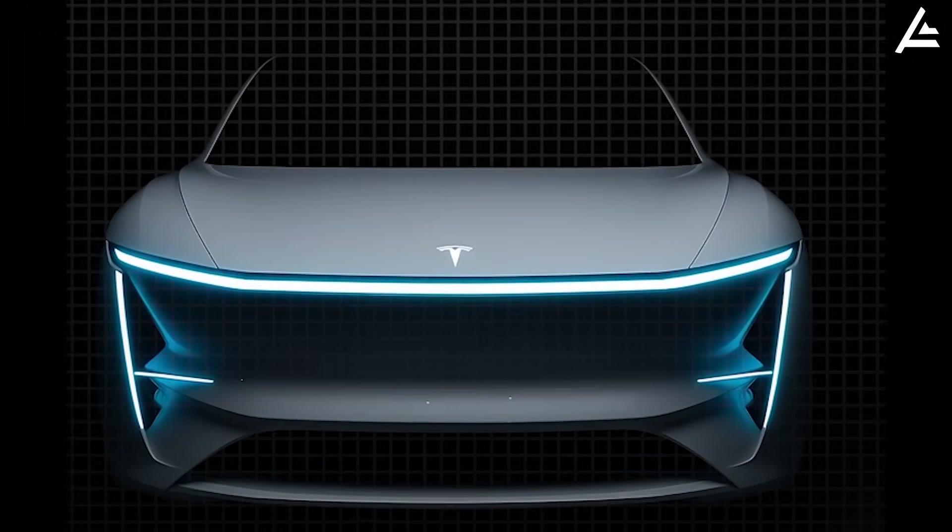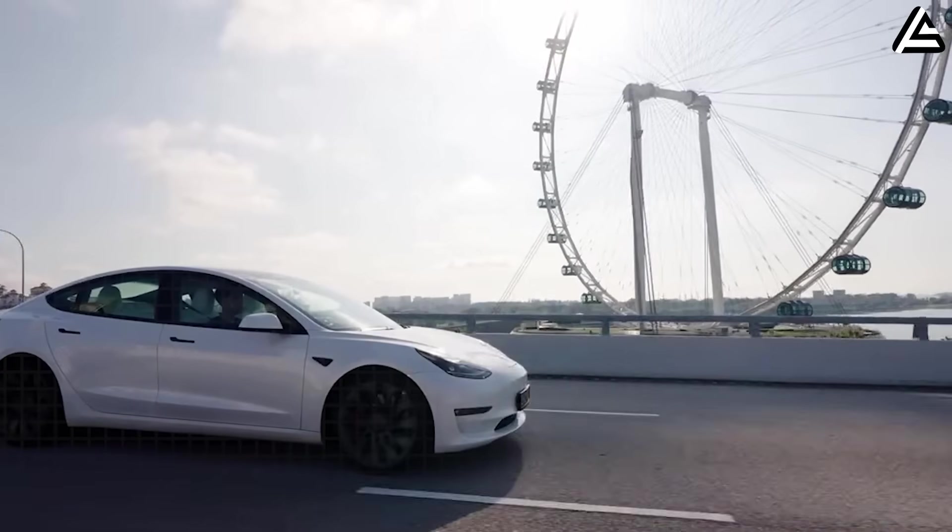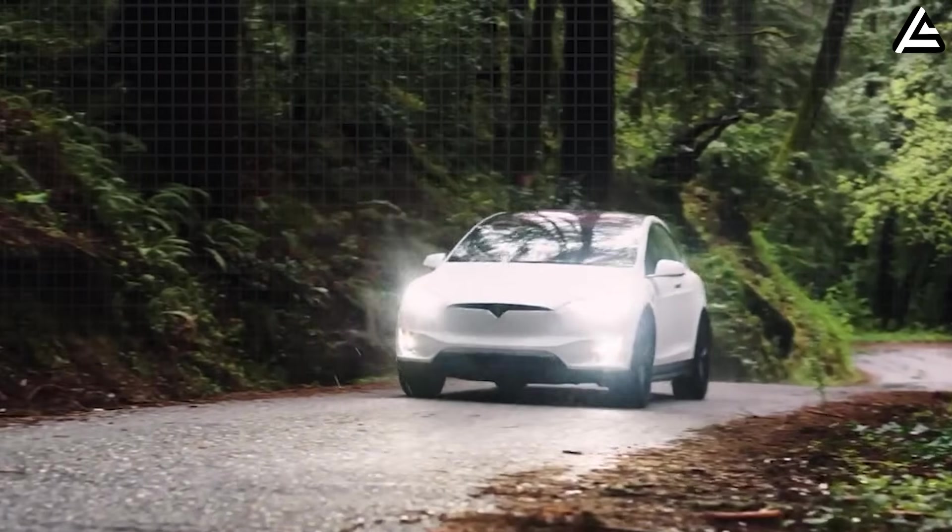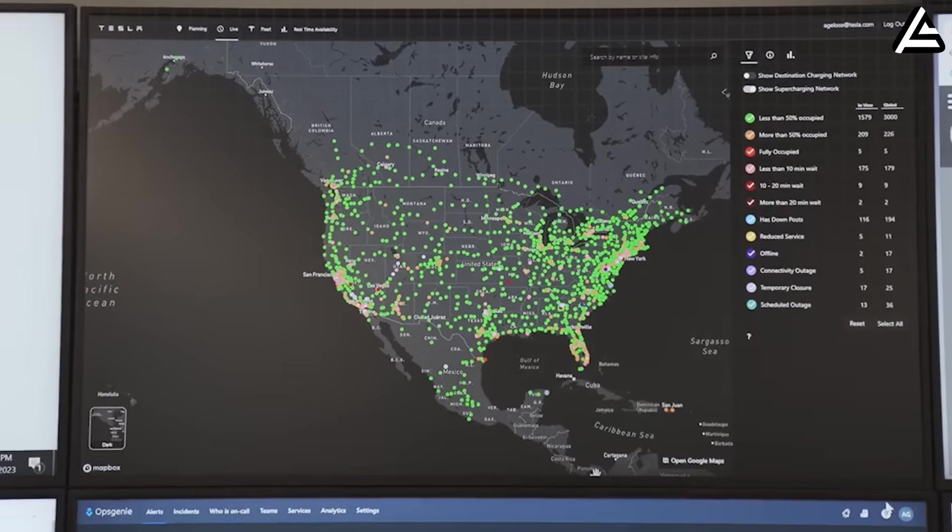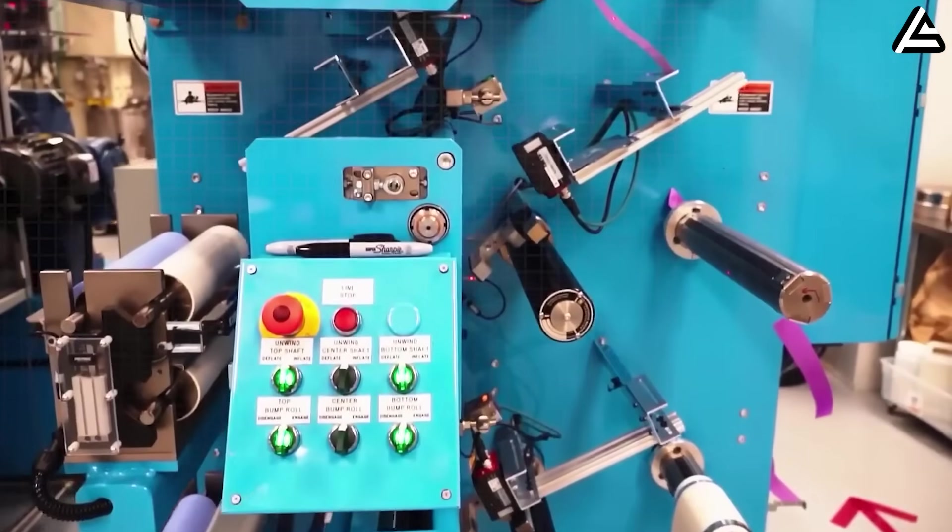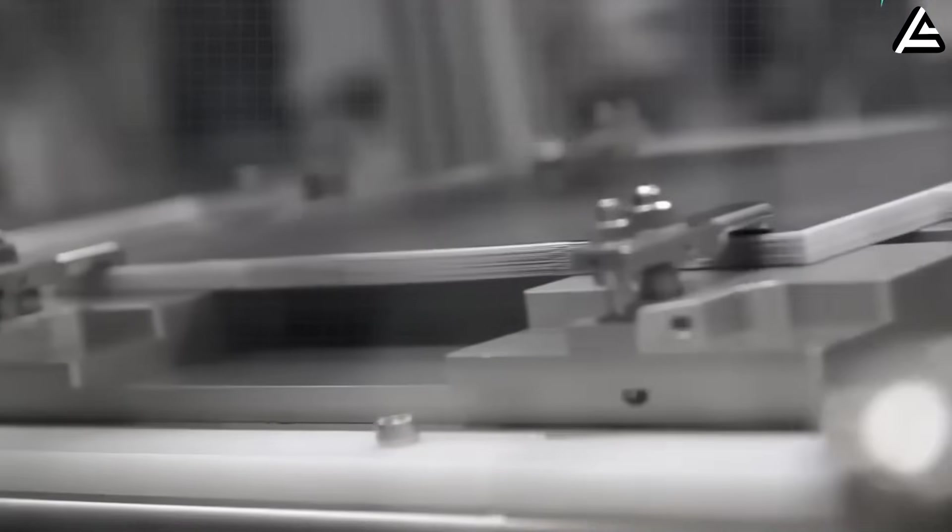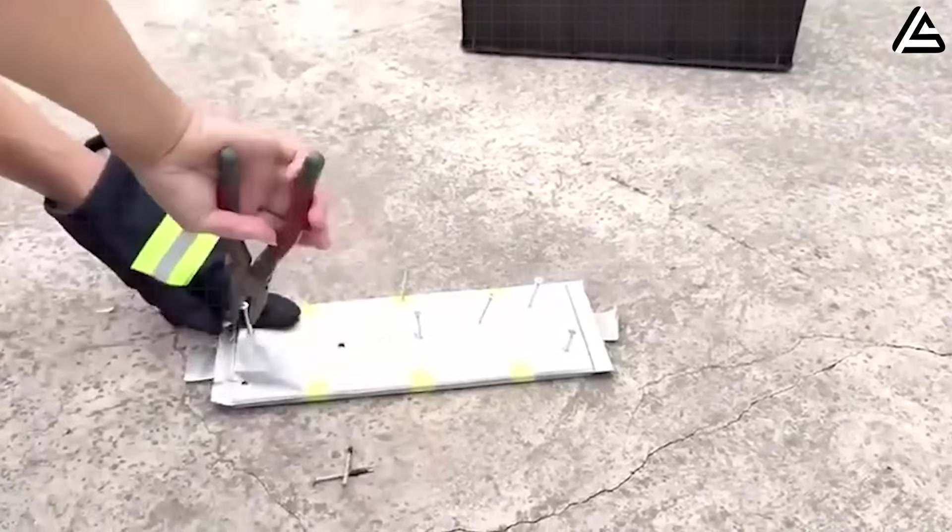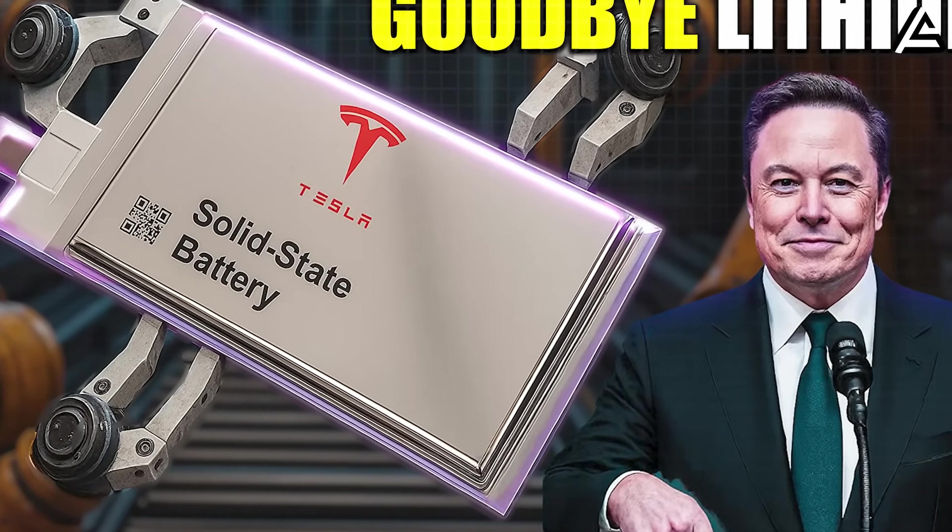The timeline also accounts for vehicle-level rollout milestones. Early Model 2 prototypes equipped with solid-state packs will undergo extensive road testing in multiple climates, including extreme heat and cold, to validate the thermal stability and durability projections made in lab conditions. Real-world range, charging efficiency, and safety metrics from these tests will inform final production specifications. Tesla is reportedly targeting a public reveal and limited customer deliveries in late 2027, with broader market availability in 2028, once production volumes reach a commercially sustainable level. While lab numbers are impressive, real-world deployment will ultimately show how well Tesla can translate this breakthrough into everyday driving.